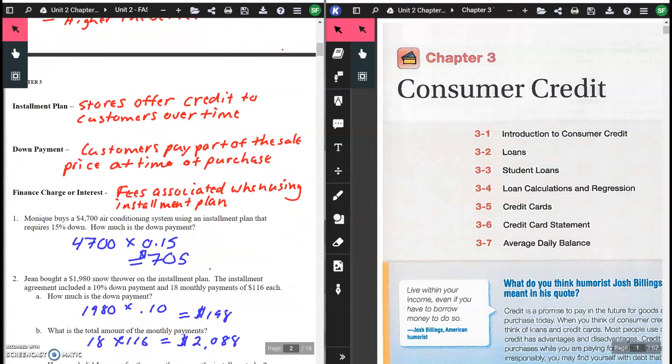Installment plan - stores offer credit where customers pay over time, like a department store credit card. Down payment is where customers pay part of the sale price at the time of purchase. Finance charge or interest are fees associated when using the installment plan. Oftentimes, you're charging an interest rate for those specific credit cards. Pause if you need more time for definitions now.